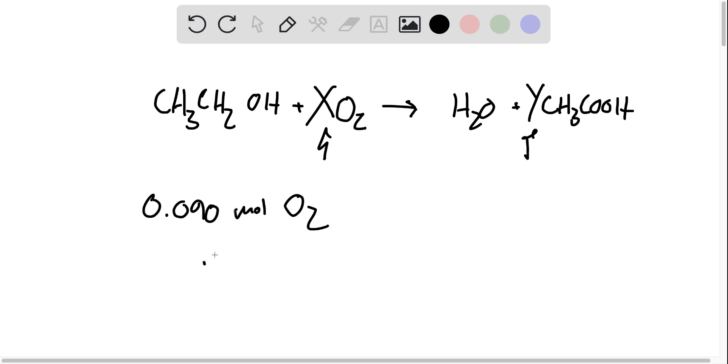Let's say we get X as the coefficient for oxygen and Y for acetic acid. Then we would simply multiply 0.090 moles O2 by Y over X and that would give us our answer, because moles of O2 would cancel and we'd get moles of acetic acid. That's really what balancing reactions is all about - finding out the ratios between the various components in your reaction.